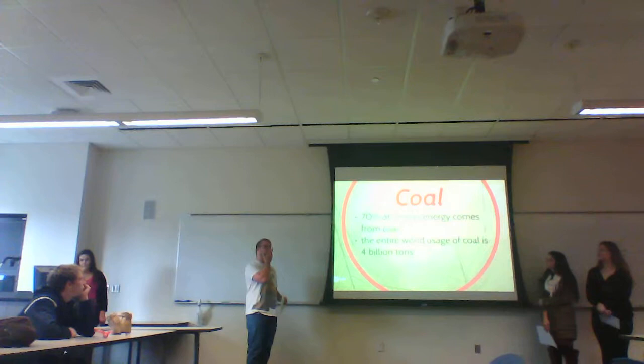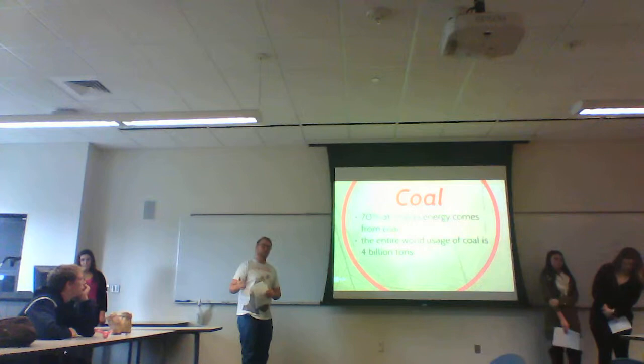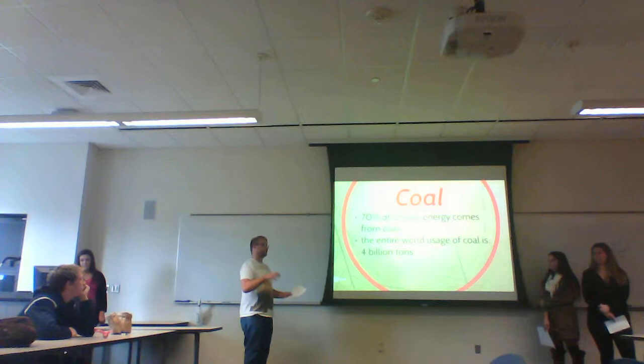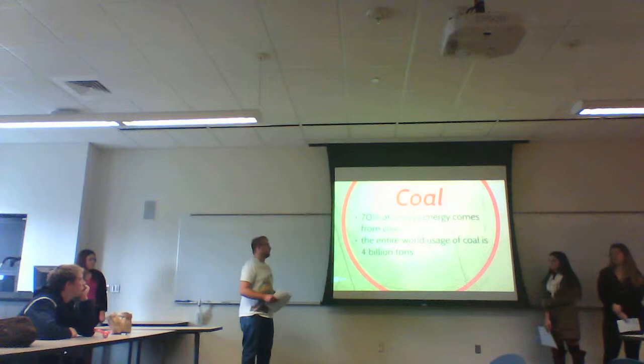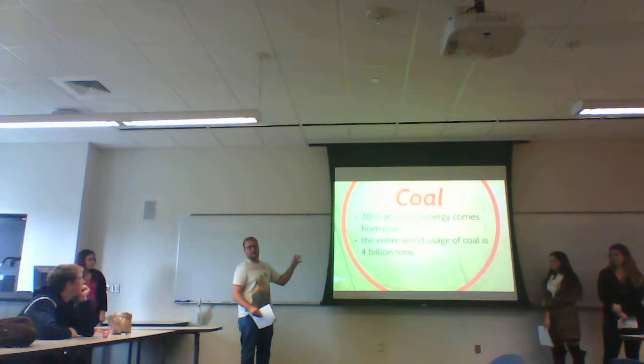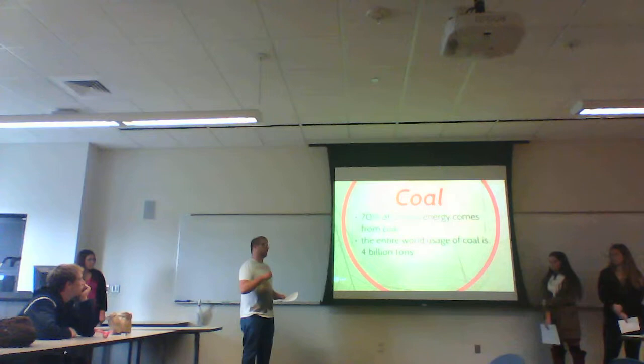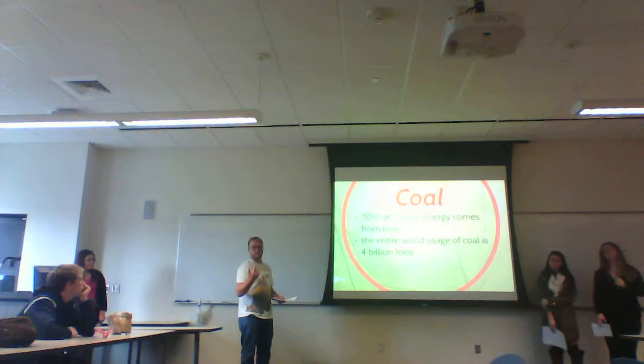Now, coal. China did not have coal during the Industrial Revolution, so it had trouble rising within that period. But now they are trying to catch up — literally 70% of China's energy comes from coal. Since China is such a huge producer, it needs a lot of coal. The entire world usage of coal is 4 billion tons, and that is what China alone uses. Four billion tons of coal, which is way too much, and is probably the number one cause of the 10 billion tons of carbon dioxide in the atmosphere every year.